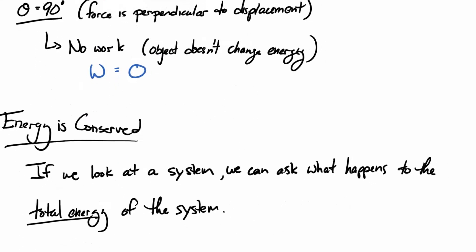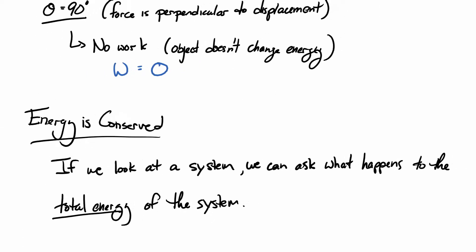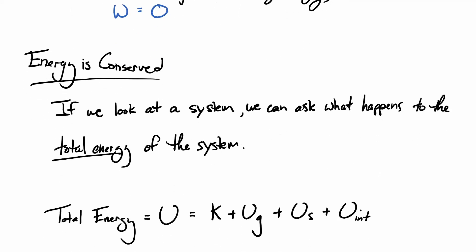Now, one other thing that we want to think about energy, we're going to say is conserved. So what we mean by this, if we look at a system, we can ask what happens to the total energy of the system. Alright, and the total energy of the system is going to be the kinetic energy plus the gravitational energy plus the elastic energy, which together we will often call the mechanical energy. And then also the internal energy, which we're going to kind of sweep under the rug more often than not, because again we're not going to really develop a robust model for that yet.